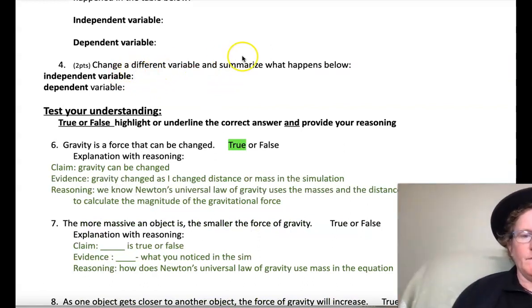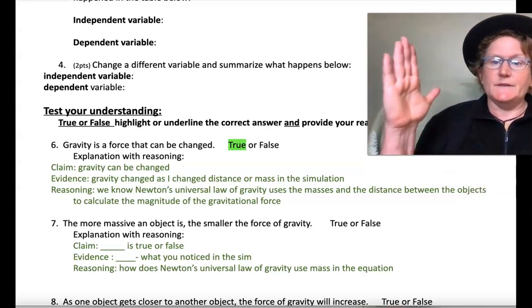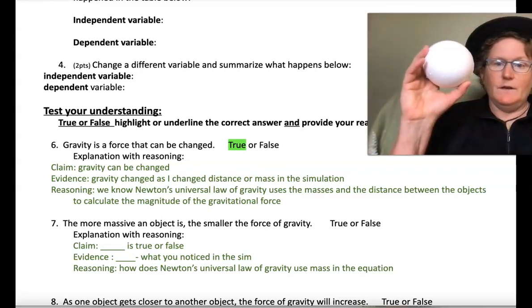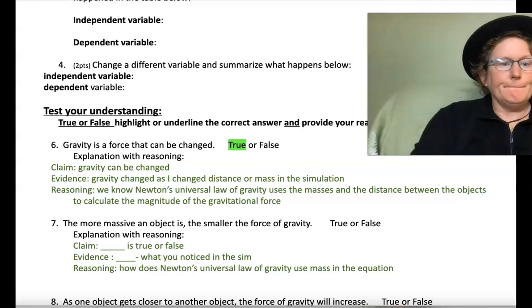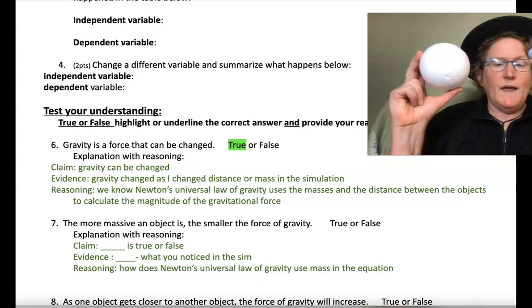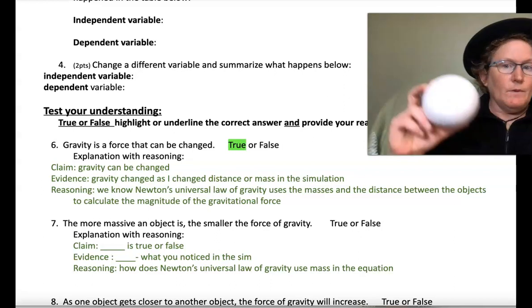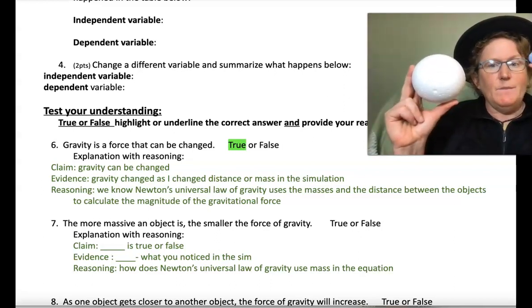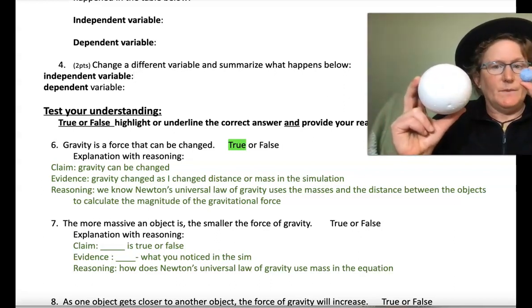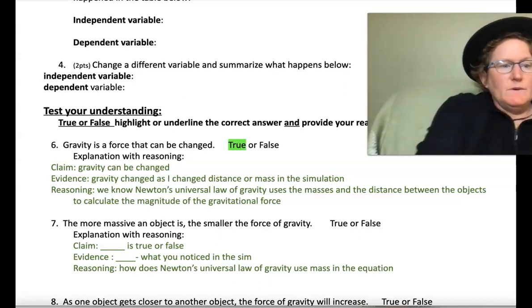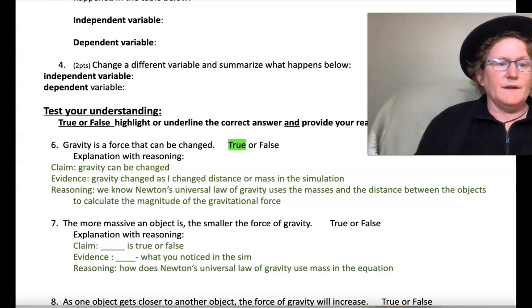So number four, you're going to change a different independent variable. For example, if you change the distance in question three, you want to change the mass in question four. And then look at what happens to the force of gravity as a result of changing the mass. Remember to keep distance the same if you're having mass as your independent variable. Keep distance the same and then just change the mass and see what happens. Remember in science, we only want to change one thing at a time.